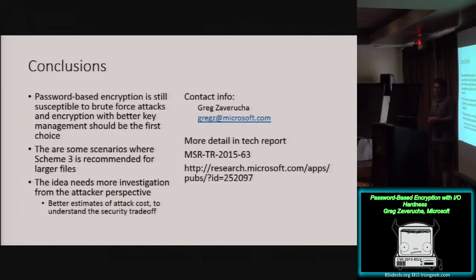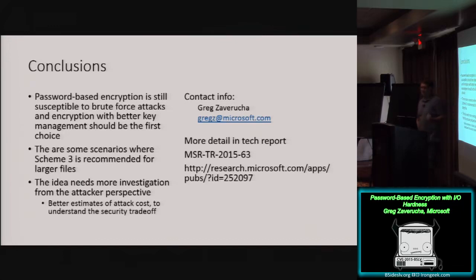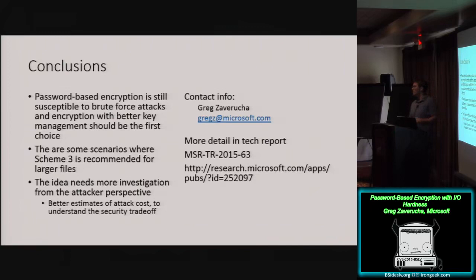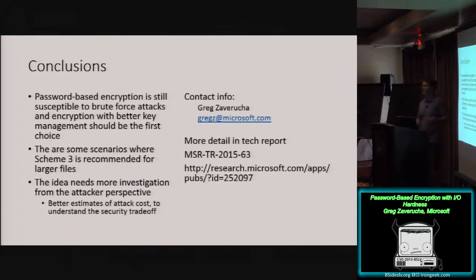To conclude: password-based encryption is still pretty weak — don't run out and start using it unless you have to. There are some scenarios where the third scheme seems to give an improvement, but overall the idea needs more investigation, especially from the attacker perspective. I did some rough estimates and counted the number of crypto operations, but it would be nice to hear from an attacker who's familiar with using GPUs as to whether this is really going to make their life hard, or whether there's an easy way they can deal with this extra work. The tech report URL is there — you can email me or catch me later if you have questions.